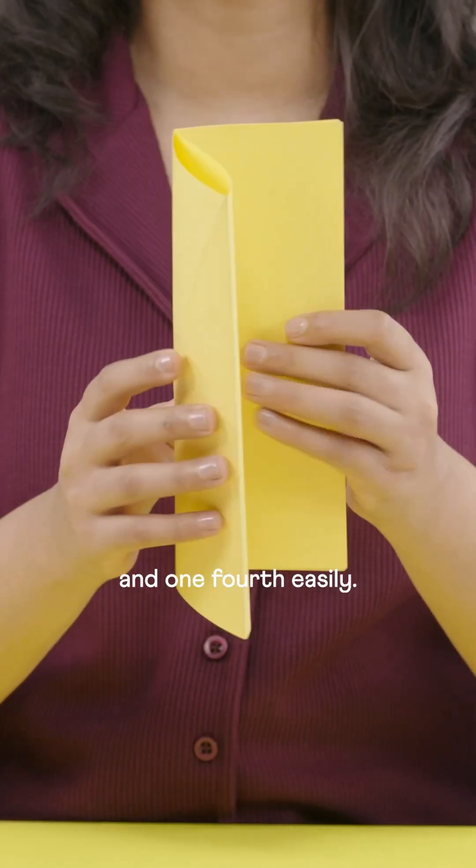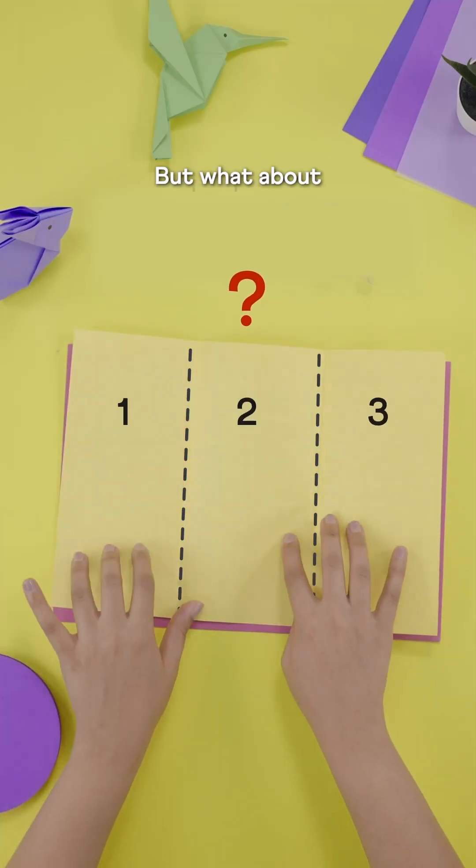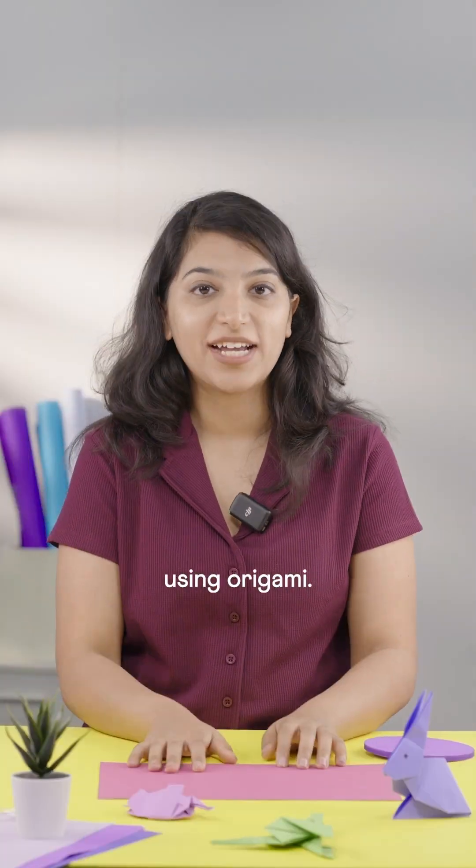You can fold a paper in half and one-fourths easily. But what about three equal parts? Here's an accurate method using origami.